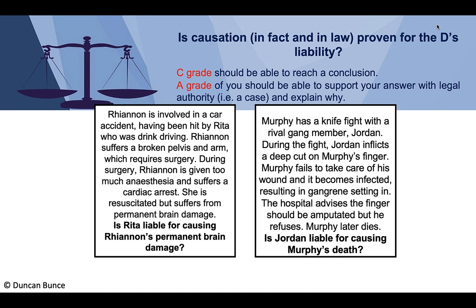Rhiannon is hit by drink-driver Rita and suffers a broken pelvis and arm requiring surgery. During surgery she is given too much anaesthesia and suffers a cardiac arrest; she is resuscitated but suffers further complications. This raises the question of whether the medical treatment breaks the chain of causation from Rita's actions.